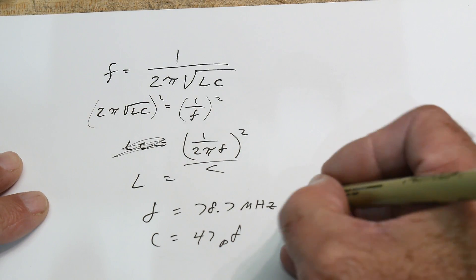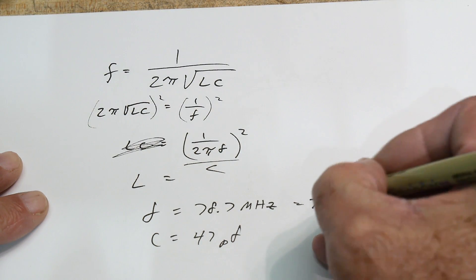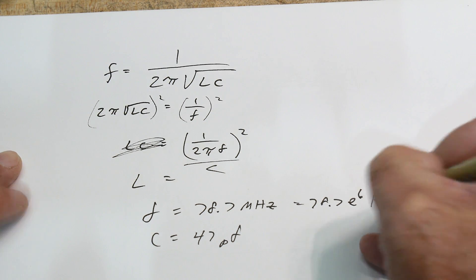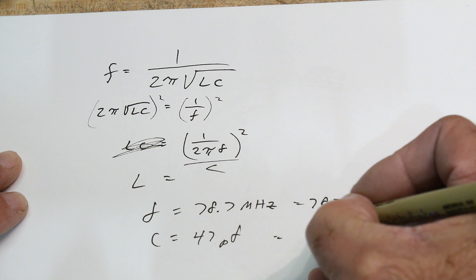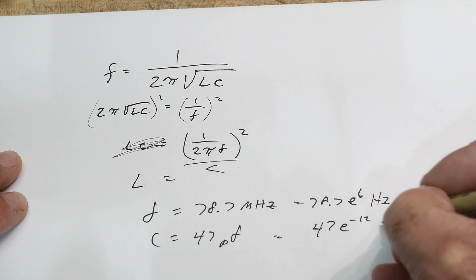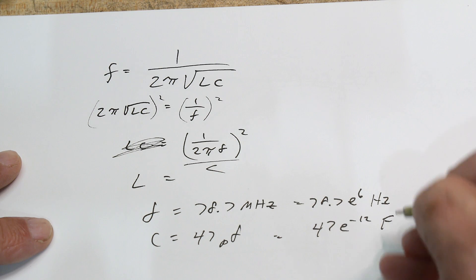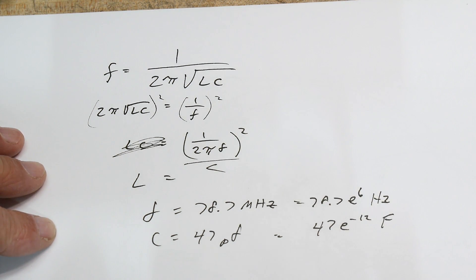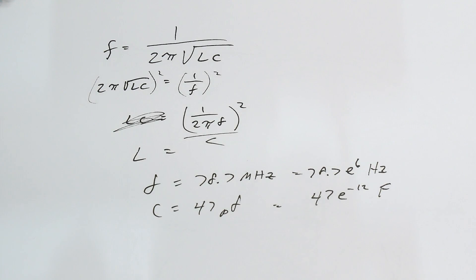And this is 47 e to the minus 12 farads. Okay, and so when we calculate the equation we'll get Henrys, right? So these are all the fundamental units. All right, so let's get out our trusty calculator.